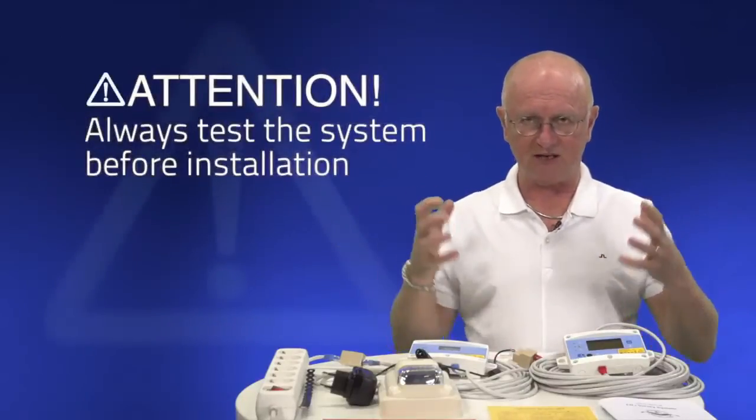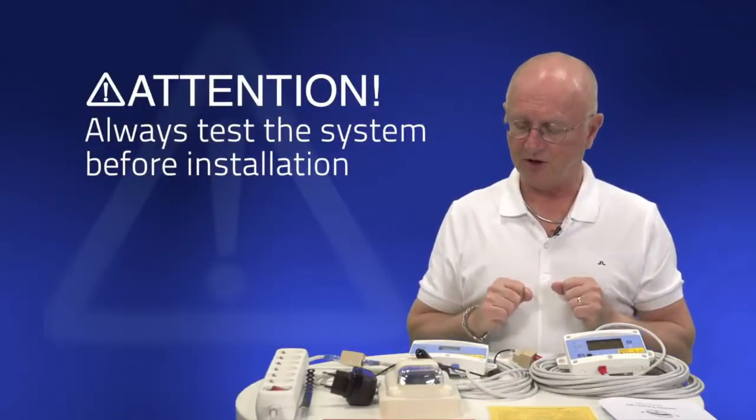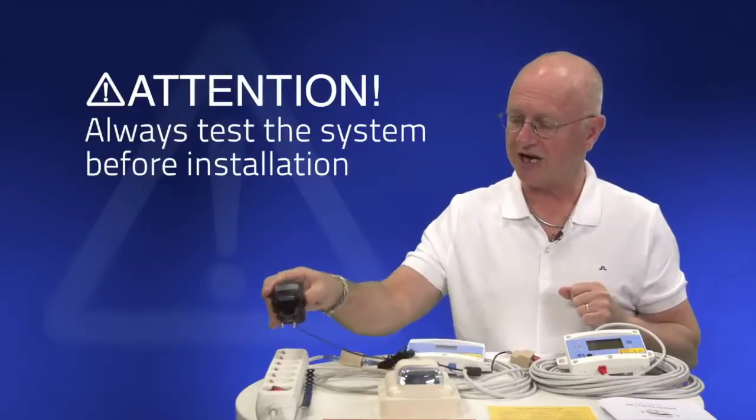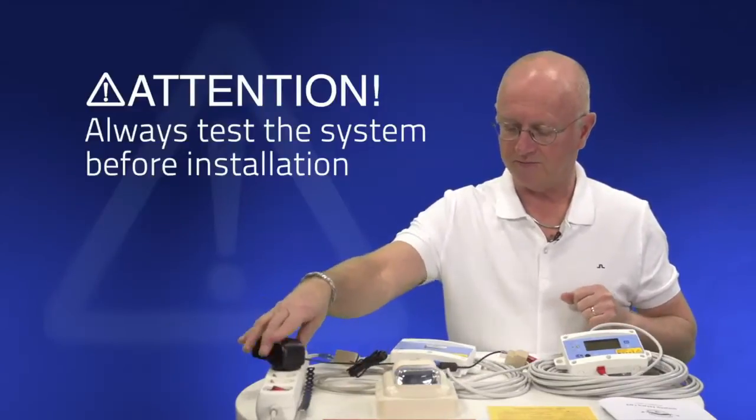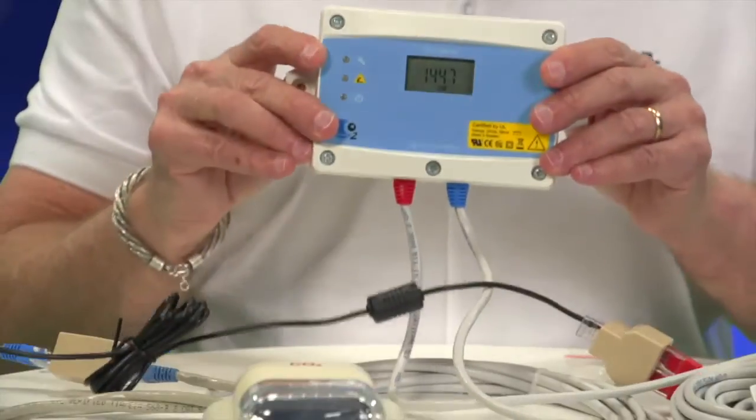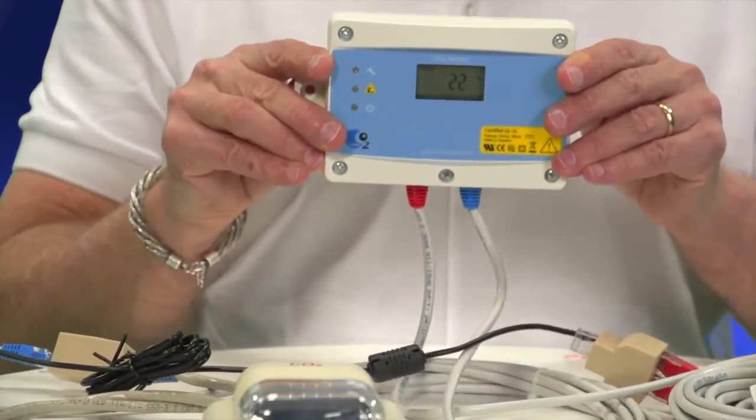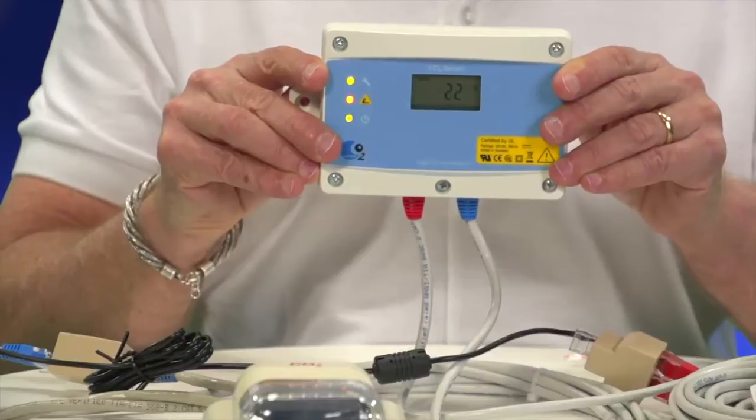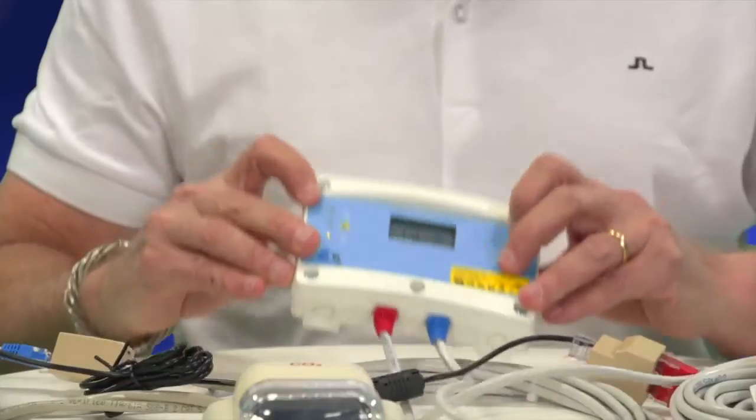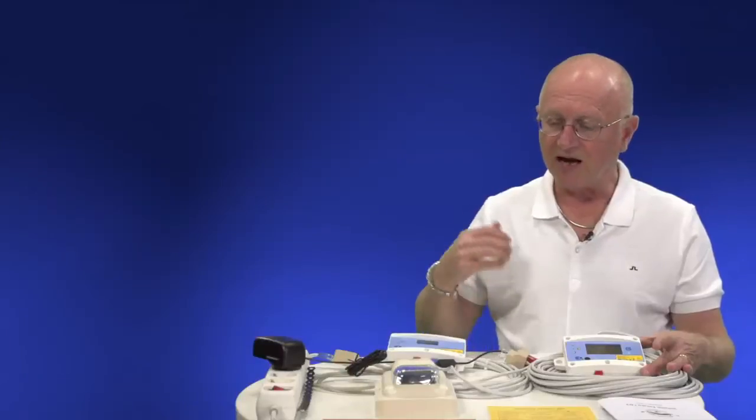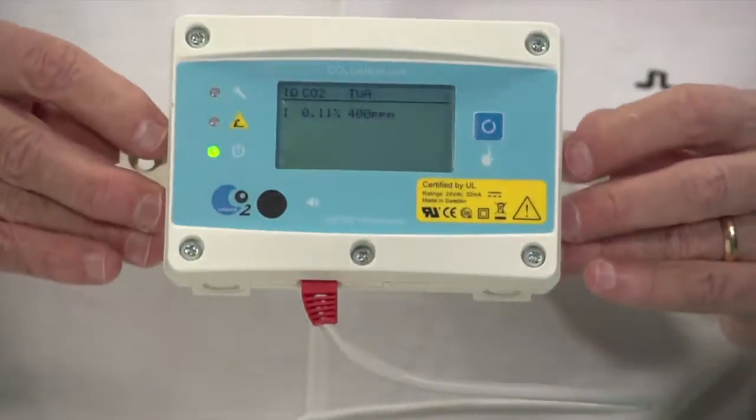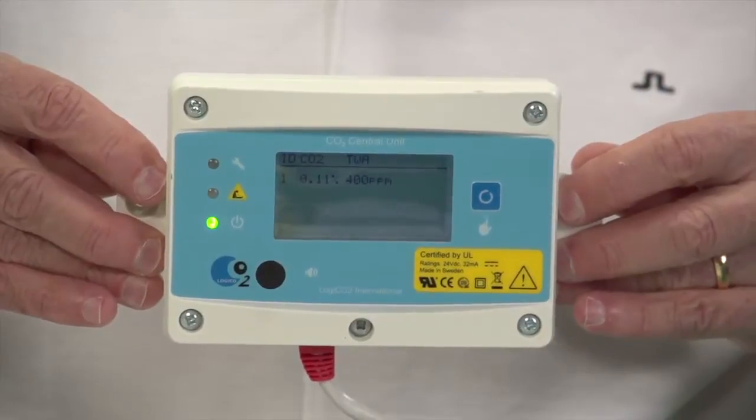Now, when you've taken the products out of the box, you want to make sure that everything is working properly. So, you connect it. What happens then is, the central unit starts showing in the display. The sensor starts heating up, saying that it's ID1. In other words, one sensor connected. After the self-test and diagnostics, the central unit will start showing the measured value from the sensor.